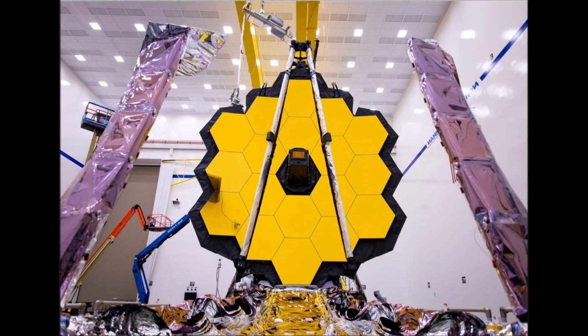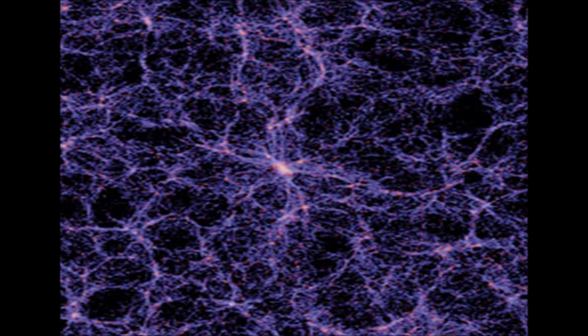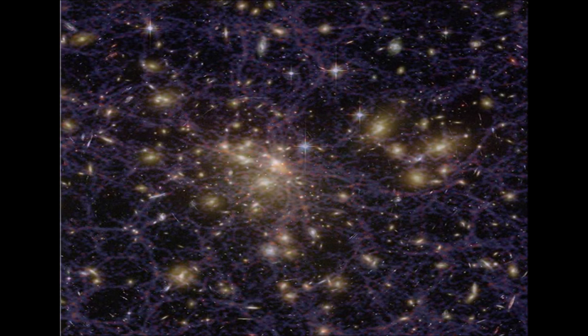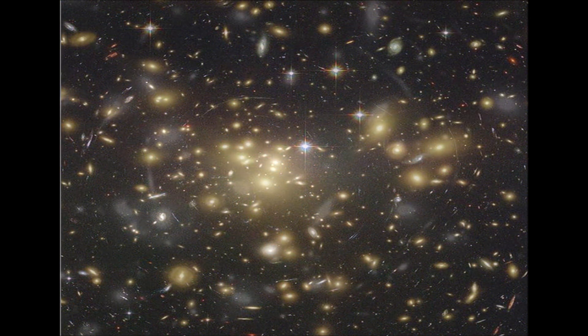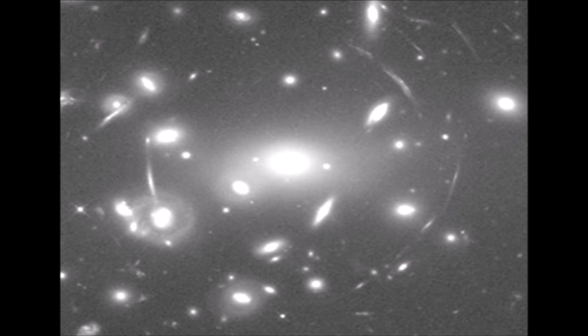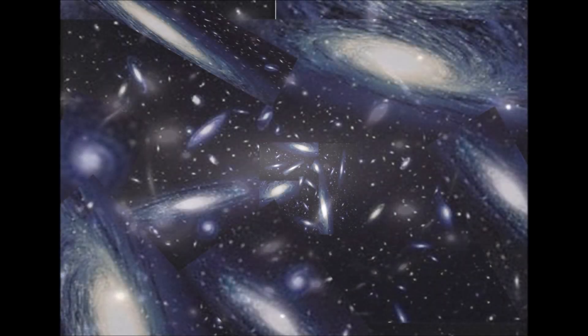What will the James Webb Space Telescope see if the Big Bang is not the beginning of our universe? I predict we will see complexity in the form of spherical and spiral symmetry or geometry that must have had a timeline that started before the Big Bang.